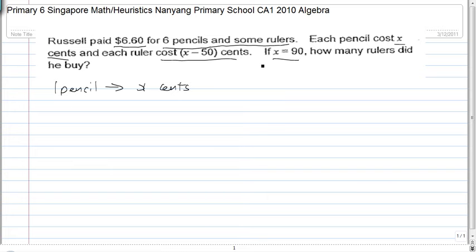If X equals 90, one pencil must have cost 90 cents. 90 cents is also represented as $0.90.